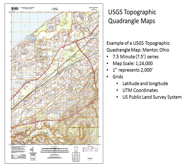The U.S. Topographic Quadrangle Map Series is one that we use a great deal in many applications, in natural resources management, and in geography and GIS. This is the example of the USGS Topographic Quadrangle Map for Mentor, Ohio. It's part of the 7.5-minute series, which is produced at a map scale of 1 to 24,000. This means that one inch on the map represents 24,000 inches in reality, or one inch represents 2,000 feet. The map includes a great deal of information beyond just contour lines and elevation and physical features — it also includes several grids.